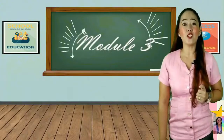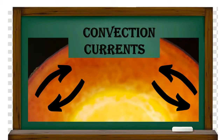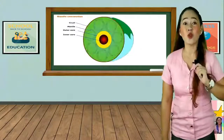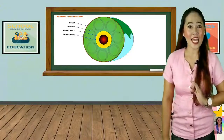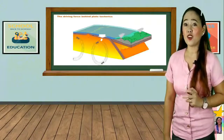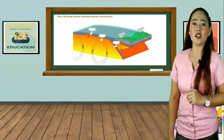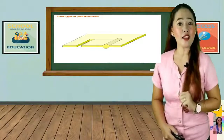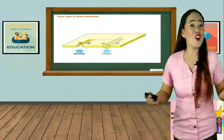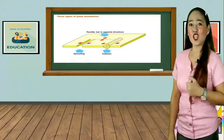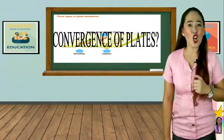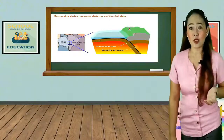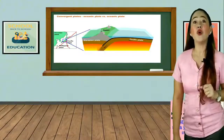Try to look at Module 3. You have learned that the convection current in the Earth's mantle caused too much pressure on the crust, resulting in the breakage of the lithosphere into smaller segments. In effect, spaces in between — or plate boundaries — are created. These plate boundaries are named according to the relative movement of the plates. Can you still recall the convergence of plates? Convergence or collision of plates can happen between oceanic and continental plates, between oceanic and oceanic plates, and between two continental plates.